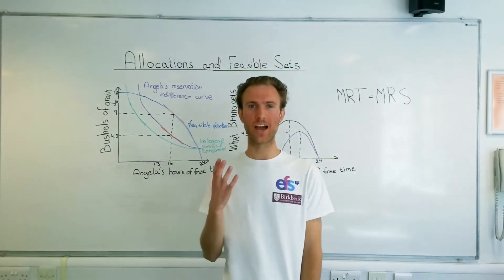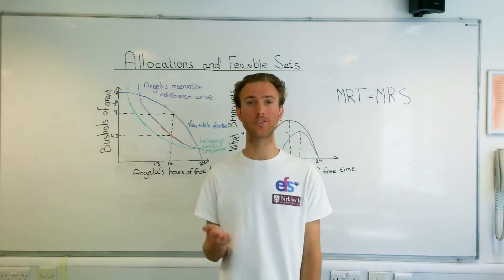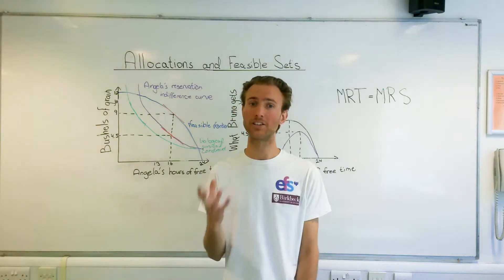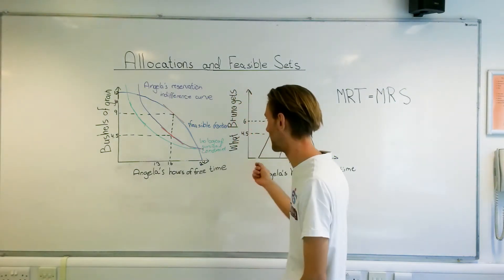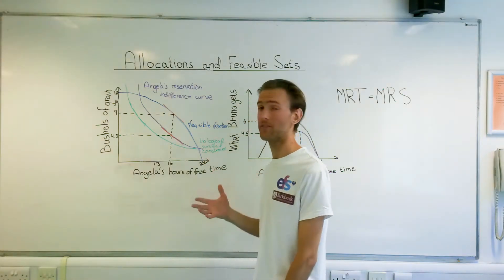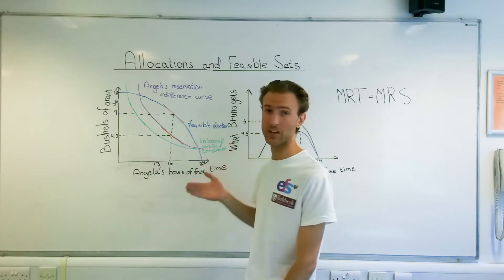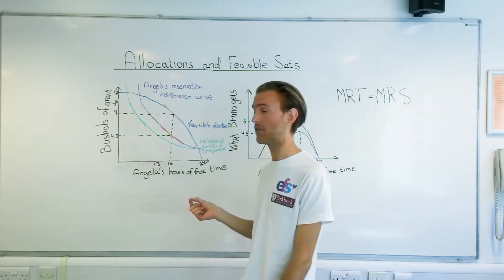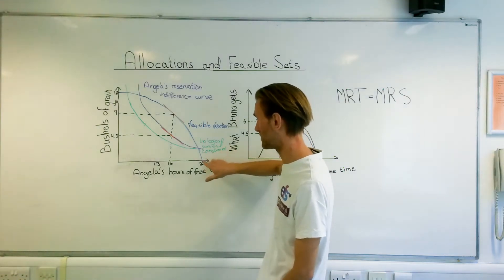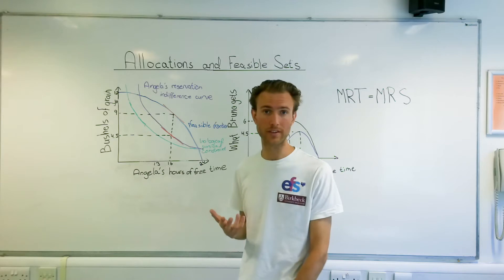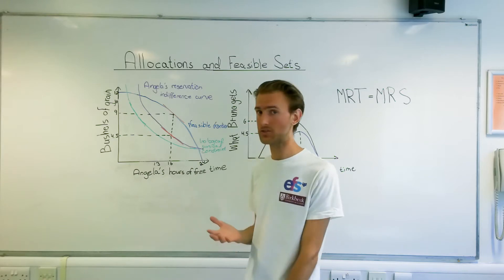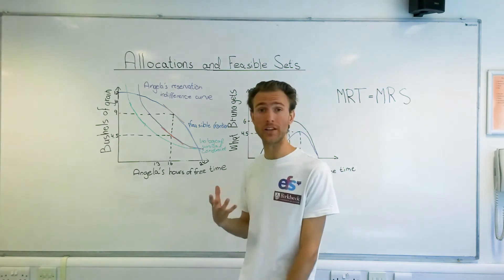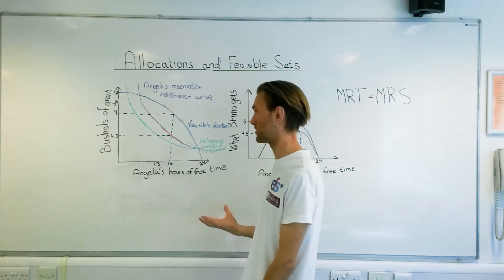Now we're going to look at an example for which Angela is no longer a slave, and Bruno cannot force her to work for him. There are legal institutions in place, and the best Bruno can do now is to make Angela a take-it-or-leave-it offer. The biological survival constraint no longer applies, because Angela can say no to working for him. The purple curve is Angela's reservation indifference curve. It meets the biological survival constraint at 24 hours of free time. So if she's not working, she would still receive government rationing, otherwise she would not survive. But the more hours of work, she needs to be compensated more than just the food she needs to survive, because of the effort that she puts into the work.